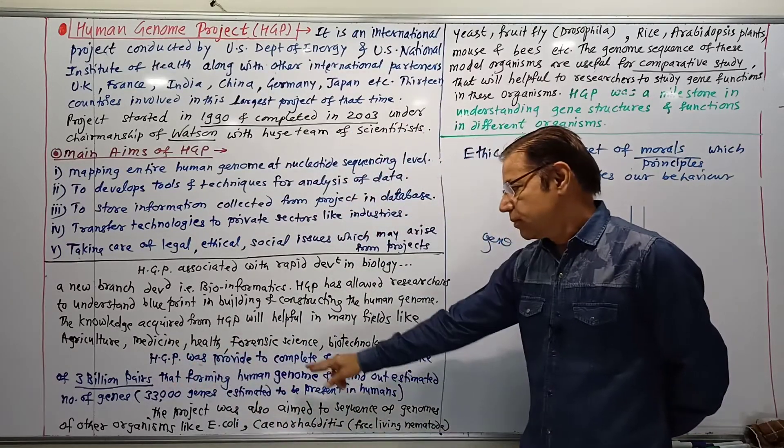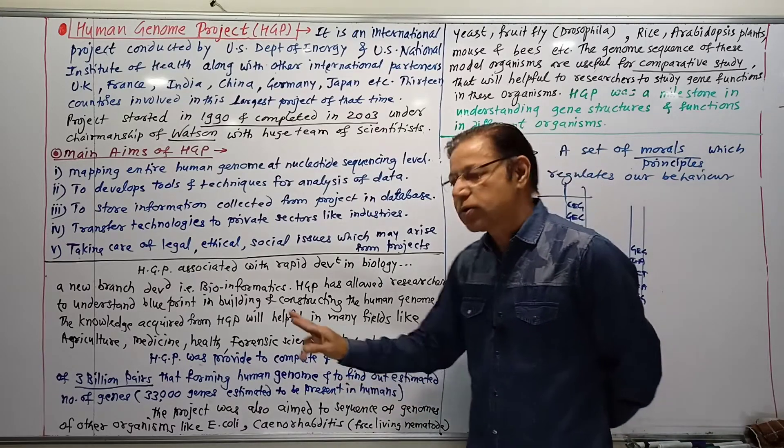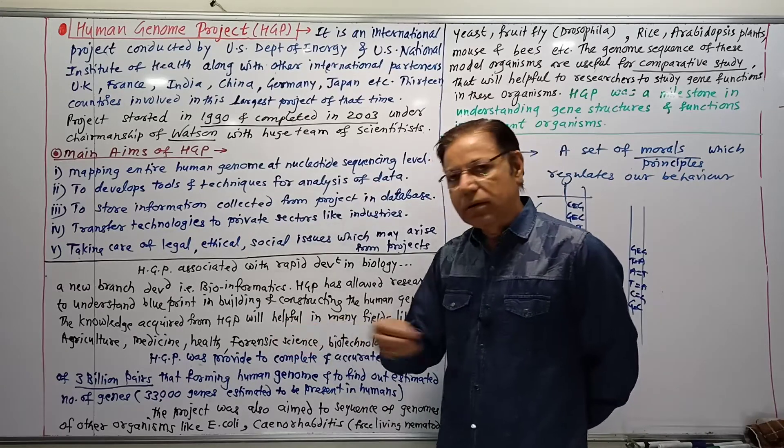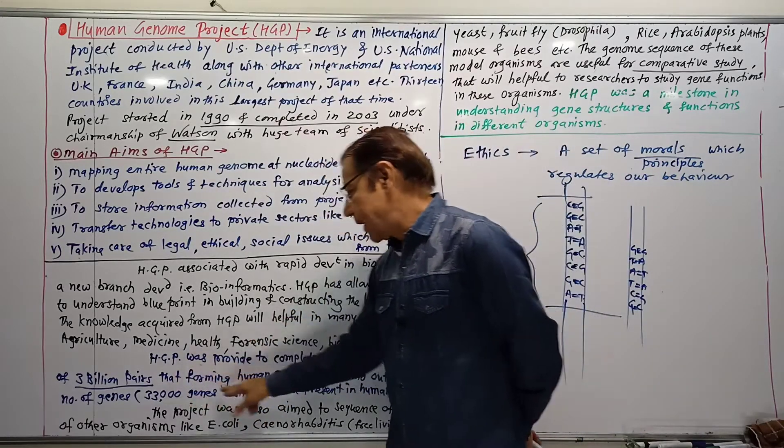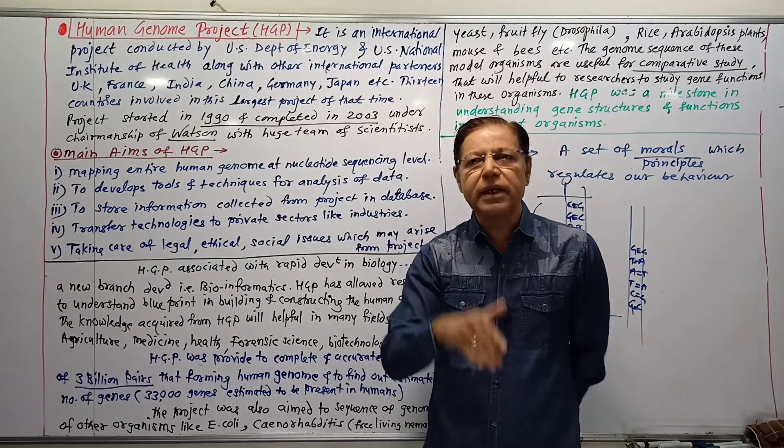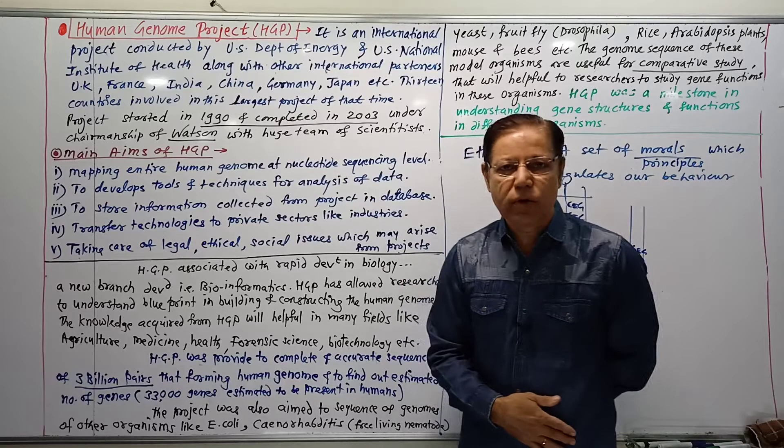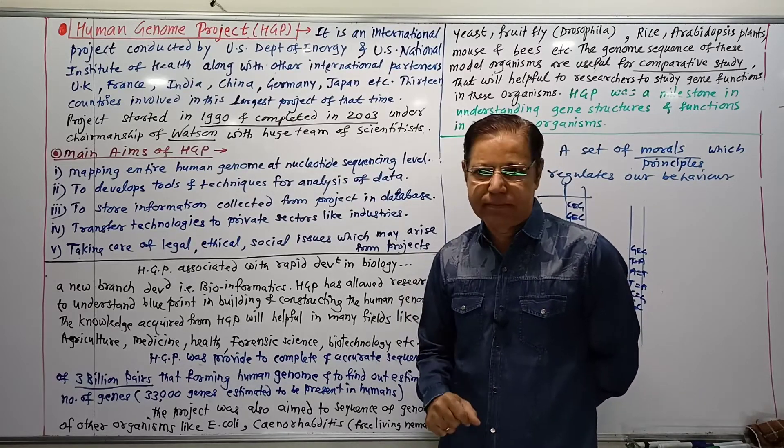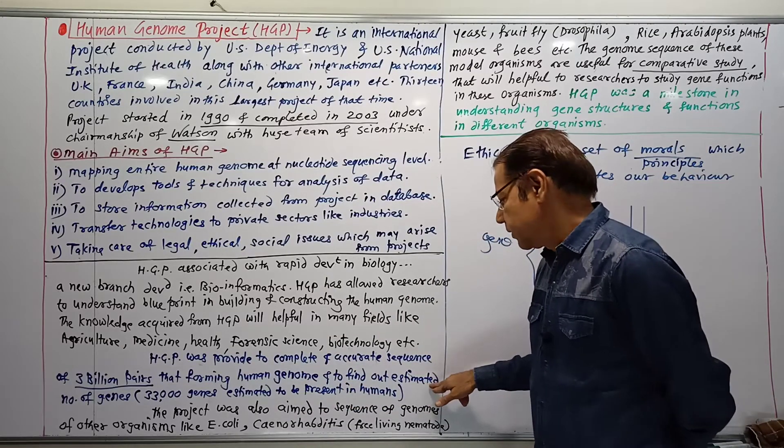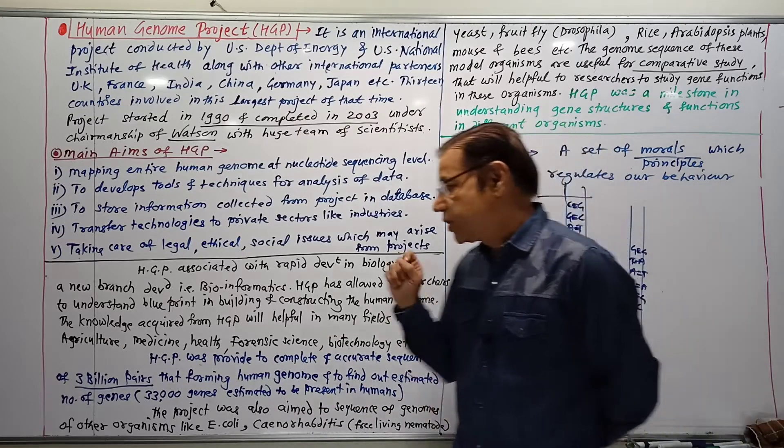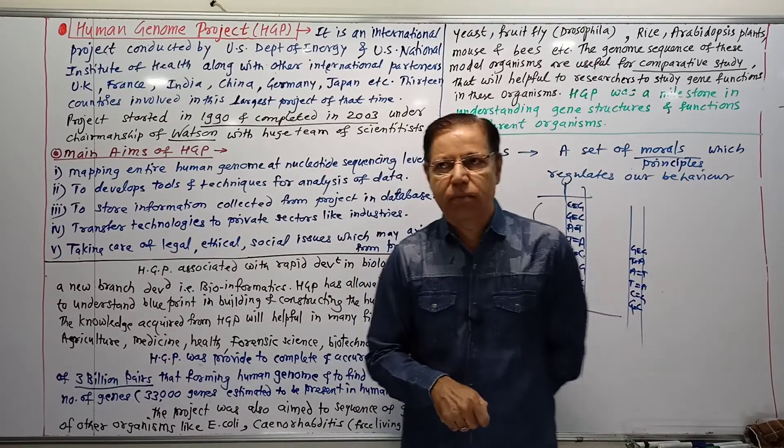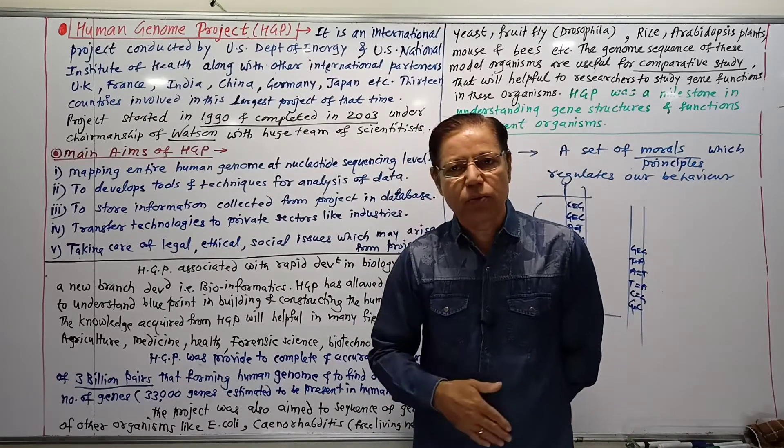HGP provided a complete and accurate sequence of nearly 3 billion base pairs or nucleotide pairs forming the human genome. This means the human genome is made up of 3 billion base pairs or nucleotide pairs—that became clear by this project. The aim is to find out the estimated number of genes, meaning how many genes are present on the genome. A genome is a haploid set of chromosomes in a cell.